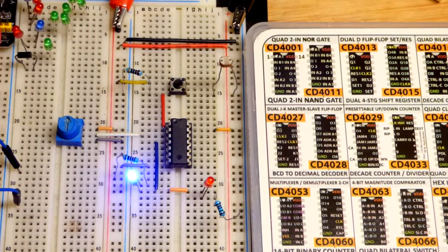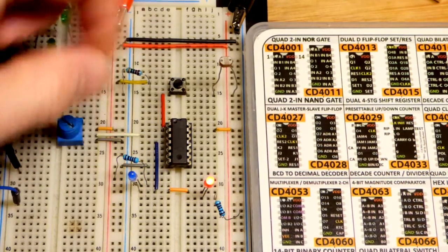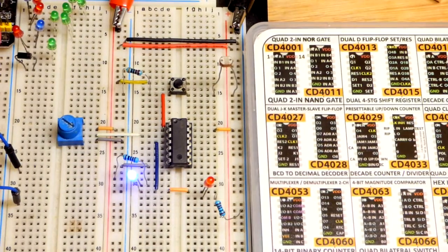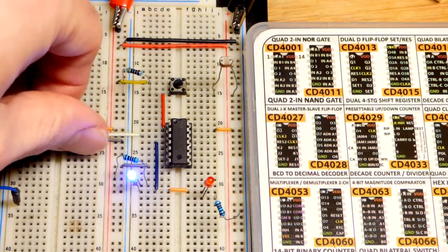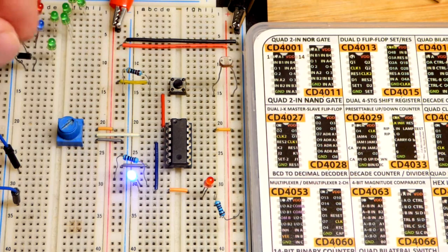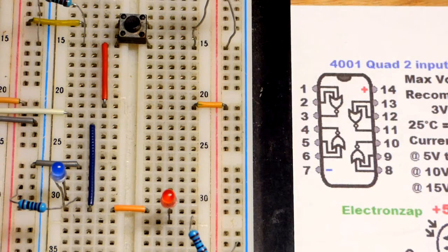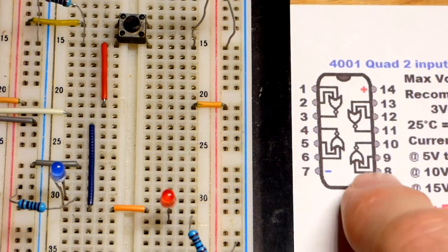I also have a light dependent resistor right there. I can turn it brighter and then it'll be a high input with a low output. If they're both high, we have a low output.